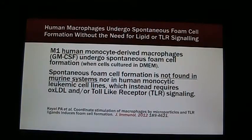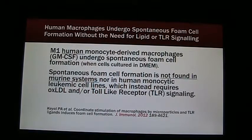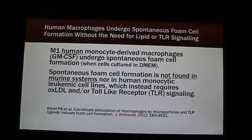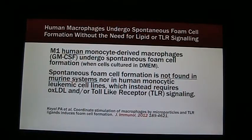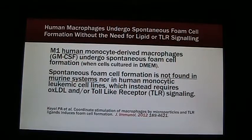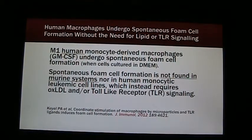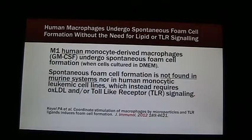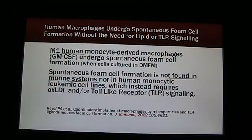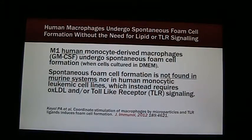Human macrophages undergo spontaneous foam cell formation without the need for lipid or toll-like receptor signaling. This is a paper by Kiel et al., published in 2012, in which he describes that M1 human monocyte-derived macrophages undergo spontaneous foam cell formation when the cells are cultured in DMEM. Spontaneous foam cell formation is not found in murine systems nor in human monocyte leukemic cell lines, which instead requires oxidative LDL and/or toll-like receptor signaling.